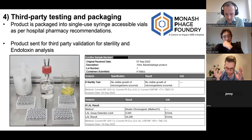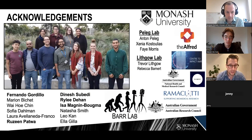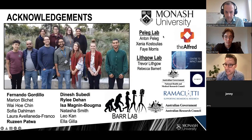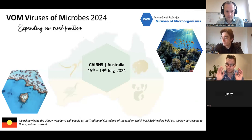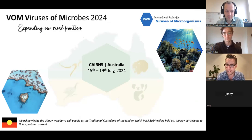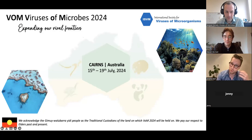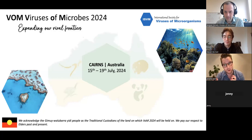These are passed to The Alfred to treat patients — we are right now in the process of treating our first patient from a phage isolated, produced, and treated all here in Melbourne, Australia. Big thanks to Dinesh, Fernando, Razine, Riley, and Isa, to Anton Peleg, his lab, and The Alfred Hospital. I also want to give a plug for Viruses and Microbes 2024 — a great conference we'd love to see you at in beautiful Cairns, Queensland, right on the edge of the Great Barrier Reef next to the Daintree Rainforest.